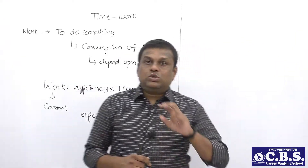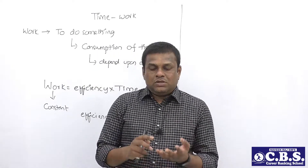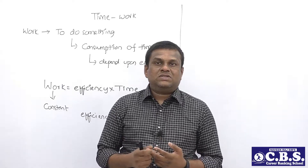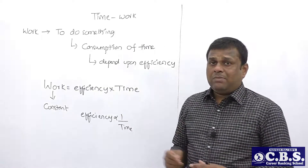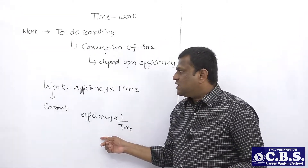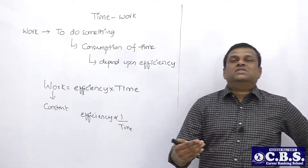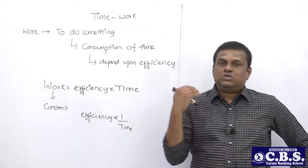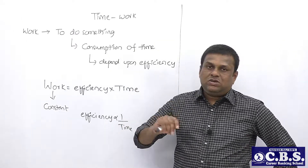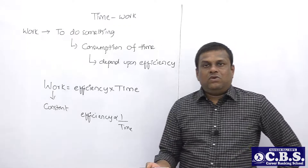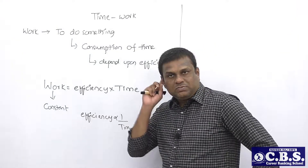So our conclusion is: don't try to add, subtract, divide, or multiply different time values directly. If you want to perform primary operations on time and work, you need to work with efficiency or work units instead. You can add different efficiencies, subtract one from another, multiply or divide them - all are possible. Similarly, you can add, subtract, multiply, or divide work values. But direct operations on time are not valid.